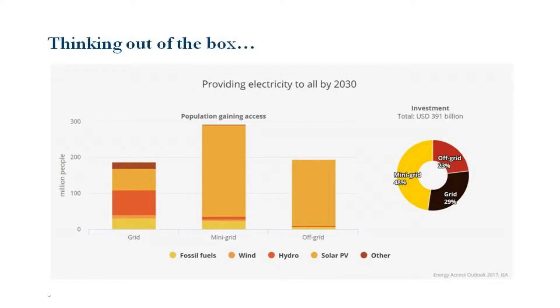Thinking outside the box: providing electricity to all by 2030. Look at the investment needed, and what is happening with the grid, mini-grid, and off-grid as new technologies come in. The idea is not just to bring the traditional grid to all areas, but to start thinking of mini-grids, off-grids, and island grids.